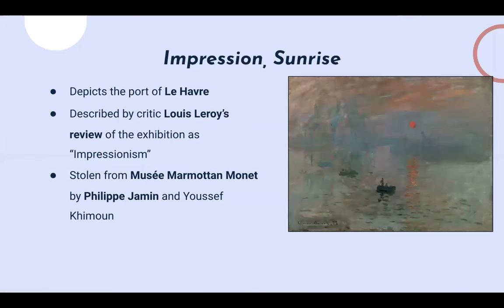Let's talk about Impression Sunrise. This painting depicts the port of Le Havre, which is a port in northern France and was actually Monet's hometown. This painting was shown at the exhibition of the Impressionists in 1874, and as mentioned, it sort of gave rise to the Impressionist movement.